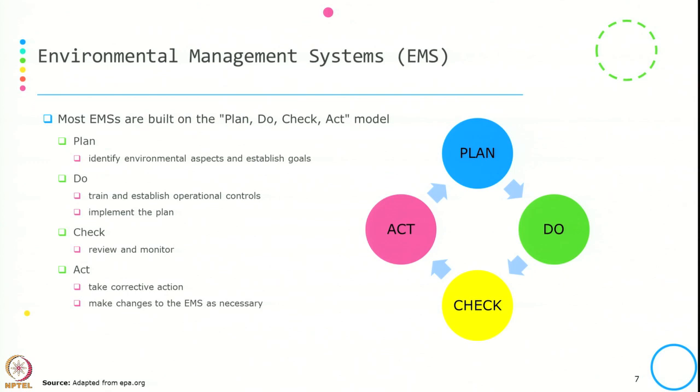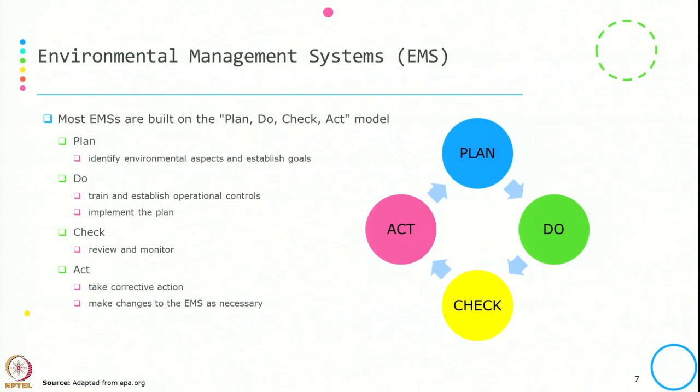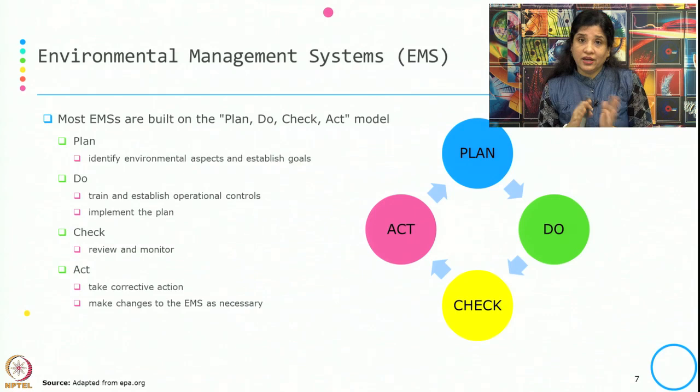What is the PDCA model? P is for Plan — identify the environmental aspects and establish goals. Do — train and establish operational controls, implement the plan. Check — review and monitor. And Act — take corrective action to make changes to the EMS as necessary. So EMSs are built on this model known as the PDCA model.